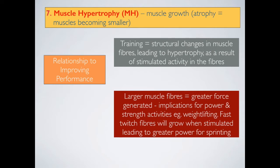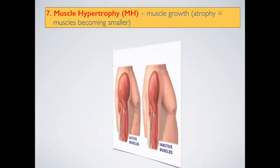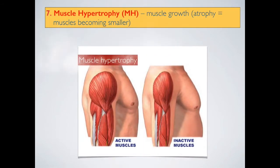Depending on the type of strength training we're doing, it could lead to increased muscular strength or increased muscular power. Looking at these diagrams, you can see that muscle hypertrophy clearly shows the muscle is actually larger, and muscle atrophy refers to those muscles that we would experience if a training program had stopped or ceased. Of course, reversibility would occur, meaning the muscle becomes smaller and experiences atrophy.